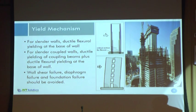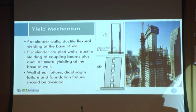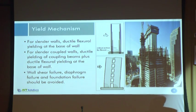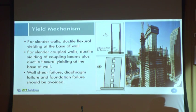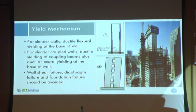In slender walls, when we design, normally we provide ductile flexural behavior at the base of the wall while it is in flexural mode. Sometimes we couple the shear walls with coupling beams and provide the yielding mechanism in the coupling beam as well. But we have to avoid shear wall shear failure, diaphragm failure, and foundation failure during earthquakes — we cannot allow yielding in those modes.